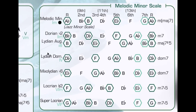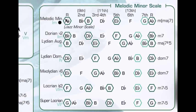Down here we show the different mode names that apply to the melodic minor scale. As mentioned before, each mode starts on a note of the melodic minor scale — the second note, third note, fourth note, fifth note, sixth note, seventh note. When you start your mode on a different note it spaces the notes differently, so each one of these modes has a slightly different feeling than the regular melodic minor scale.